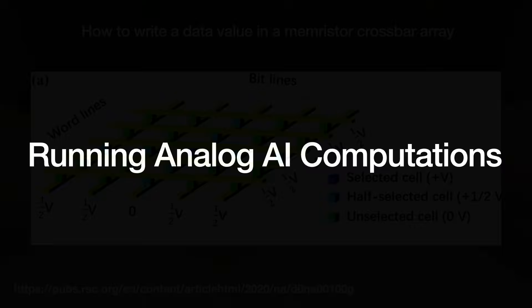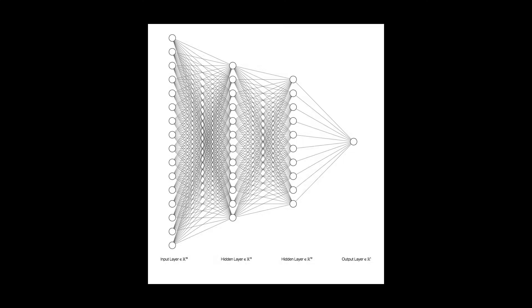When we run inference on a model, what the hardware is doing is performing many vector matrix multiplication operations. The model is made up of parameters, numbers that we obtain through training. We take those parameters, as well as the numbers from our data input, and then multiply and sum together many, many times over.